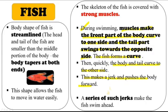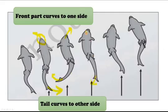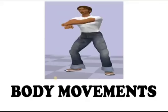This curving makes a jerk and pushes the fish's body forward. A series of such jerks makes the fish swim ahead. The head and tail always move in opposite directions — when the head moves left, the tail goes right, and vice versa. This alternating curve of the front part and tail is the characteristic swimming movement of fish.